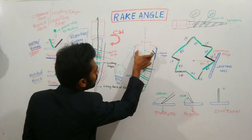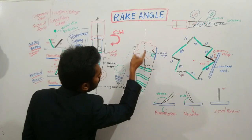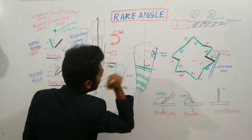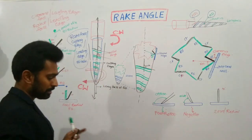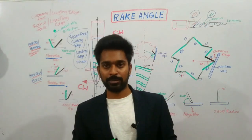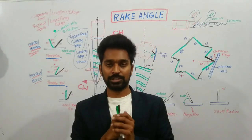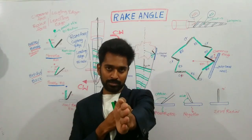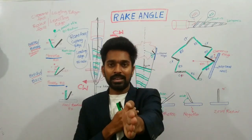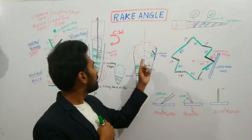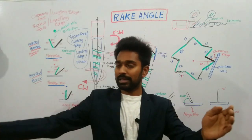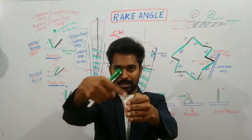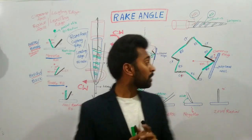If you observe this cross section, this is the radius of the file — the line running from the center of the file towards this end. Half of the diameter is nothing but the radius. If the angle is formed between the radius of the file and the cutting edge, this angle is called the rake angle.